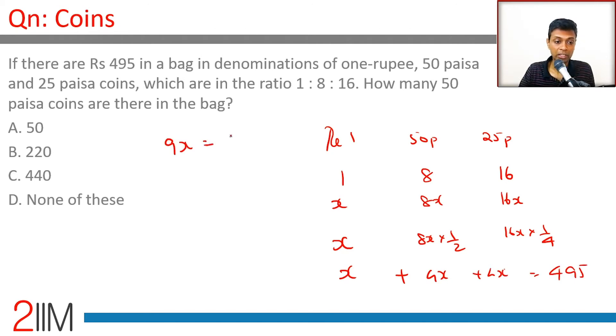9x equals 495, so x equals 495 by 9, which is 55. There are 55 one-rupee coins. How many 50p coins? That will be 8 times 55. 55 into 8 is 110 into 4, which equals 440.